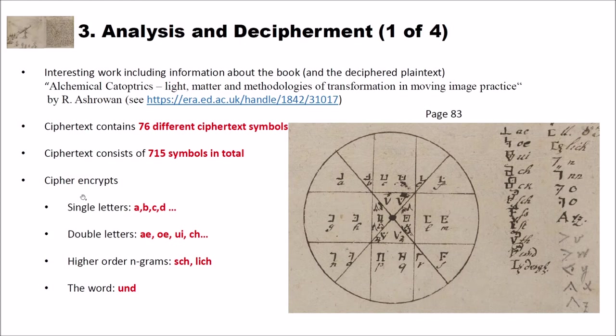And it also encrypts higher order engrams like SCH, which is very common in German, or LICH, which is also very common in German. And of course, and finally, it encrypts the word und, which means and.